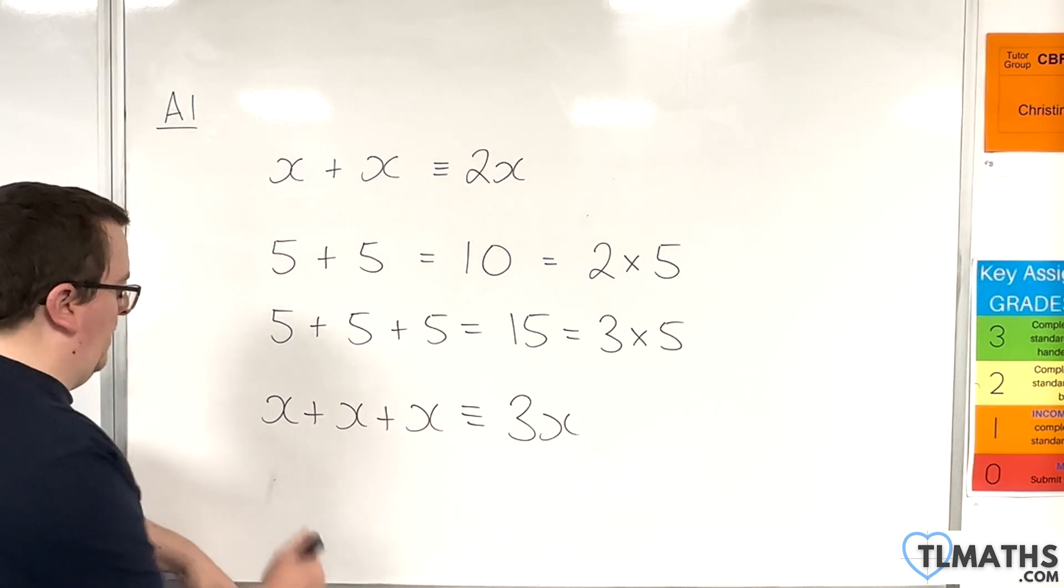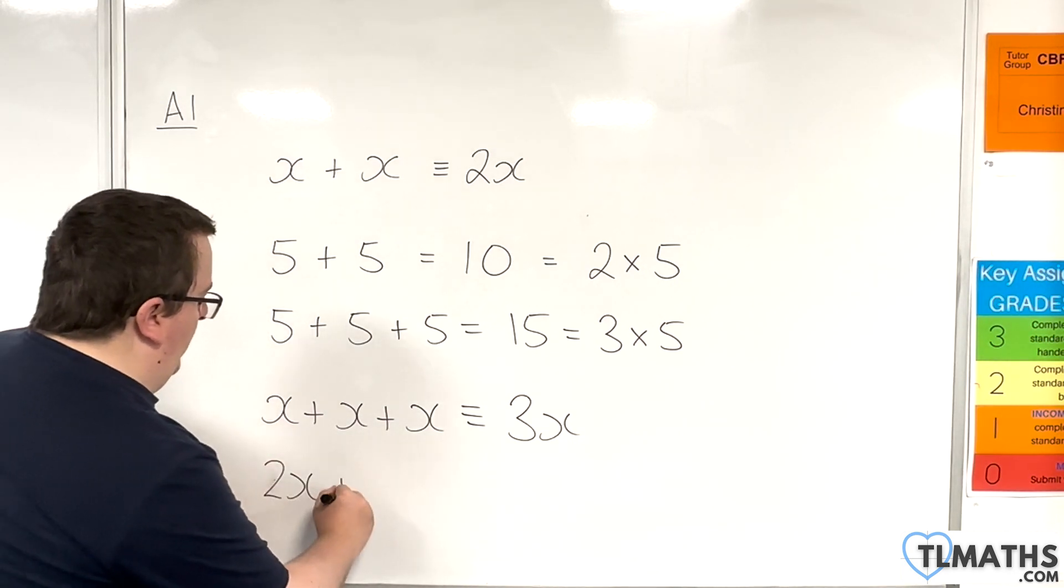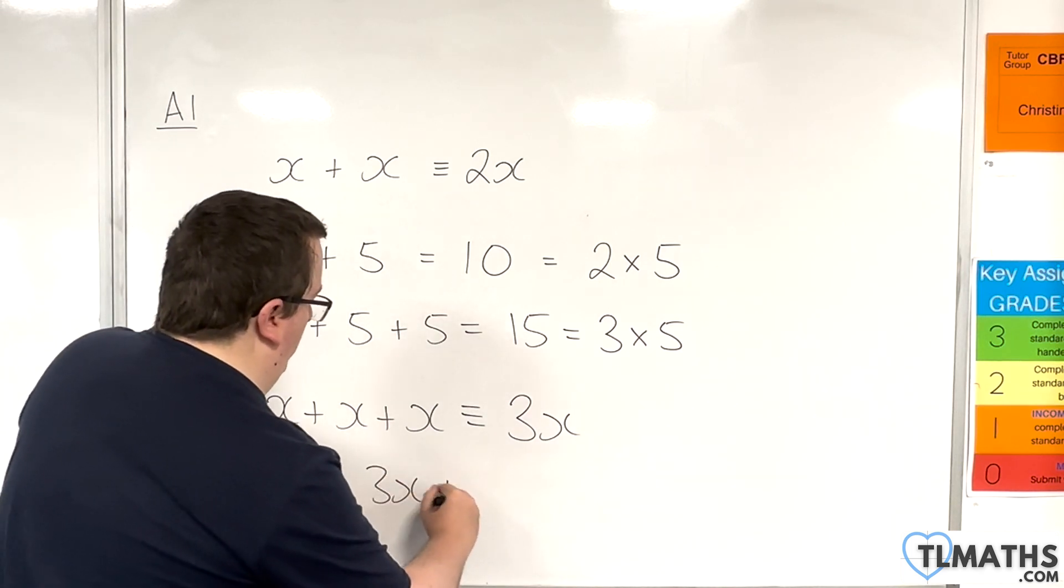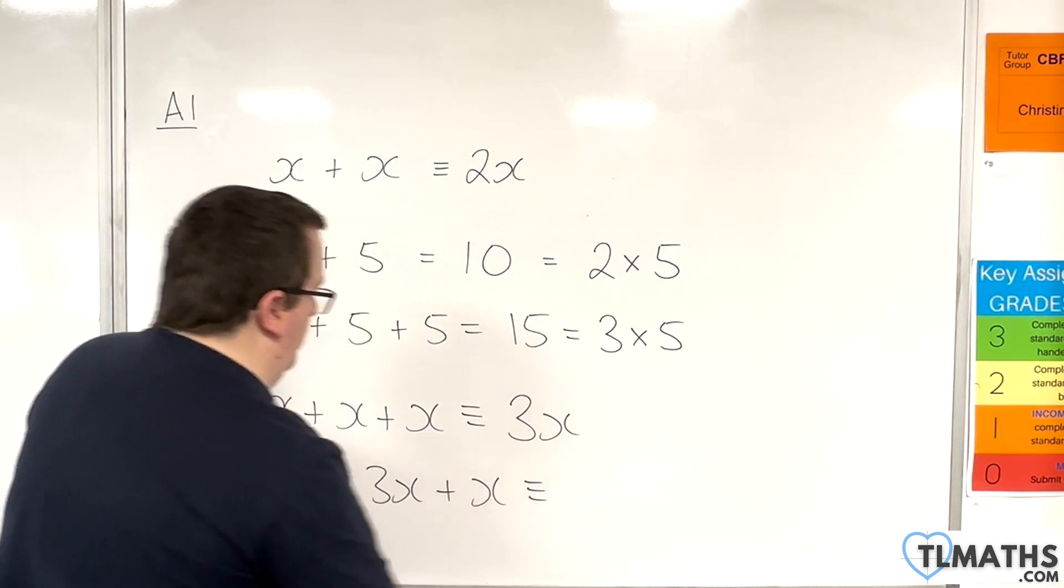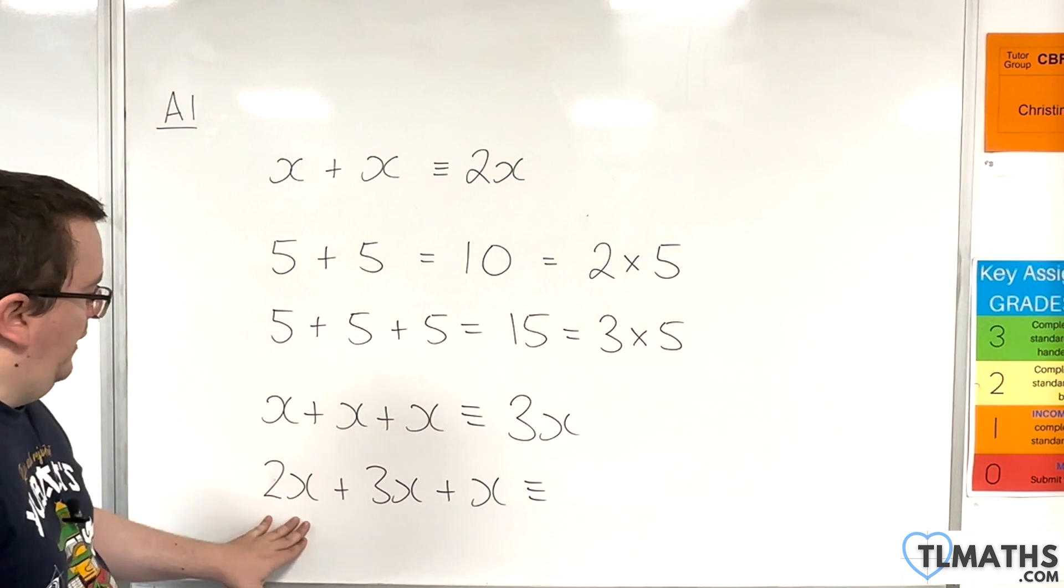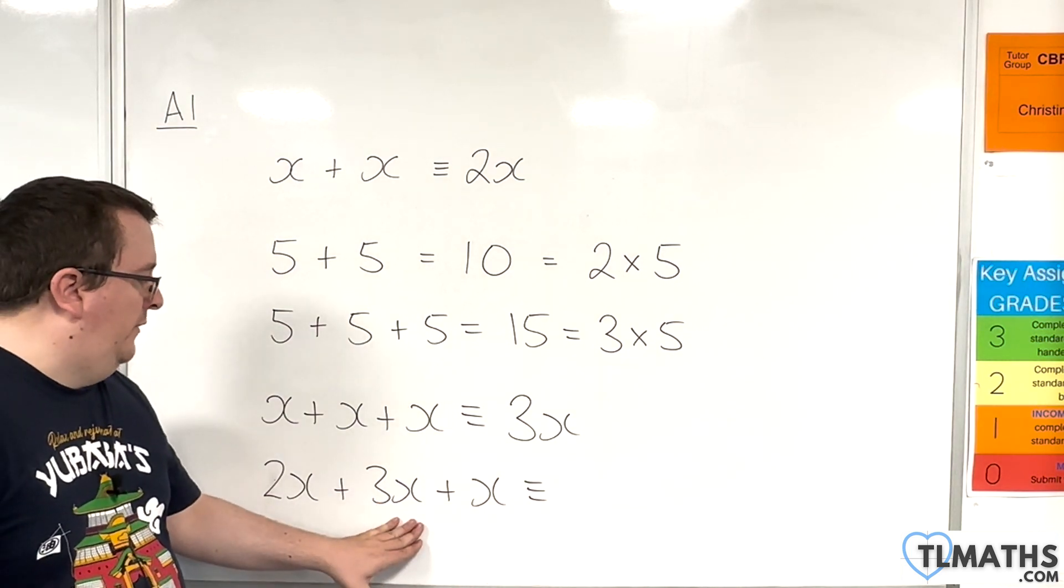...then I've got two x's and another three x's, so five x's, plus another x, so six x.